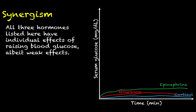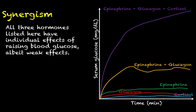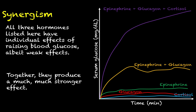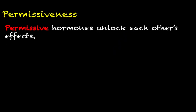This is the idea of synergy. If these three hormones are acting all by themselves, we're not going to see very strong effects. But if we co-inject epinephrine and glucagon so that both are doing their jobs at the same time, we see a much more impressive effect. And when all three hormones are acting together, we get an exponentially more impressive effect on raising blood glucose than any of those three hormones acting alone. Together these hormones produce a much stronger effect — that is synergism.